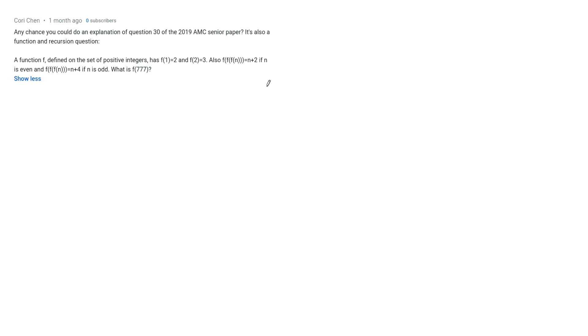Alright, so the first thing I did was set n to be 1 and see what happens when we apply this rule here. So f of f of f of 1 is n plus 4 if n is odd. So that will be 1 plus 4. Now f of 1 we know is 2, so we've got f of f of 2 is 5 and we also know f of 2 is 3, so this is f of 3 is 5.